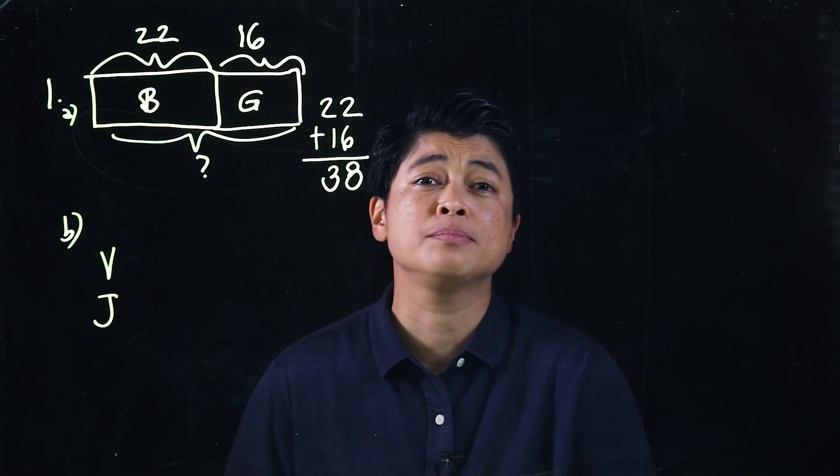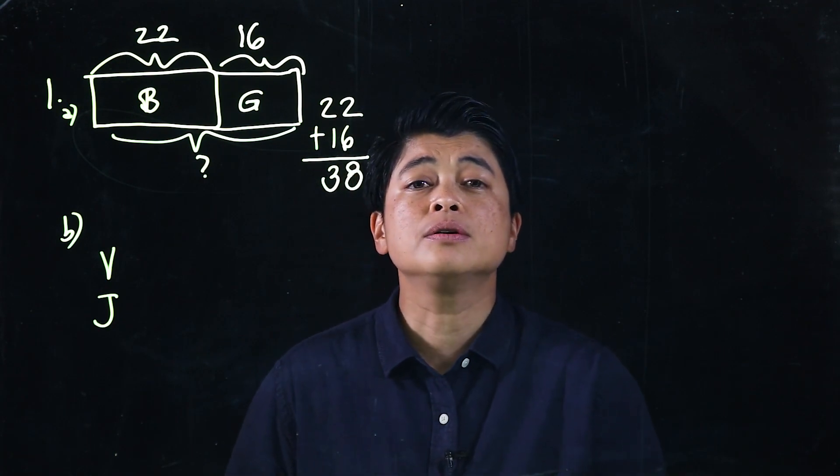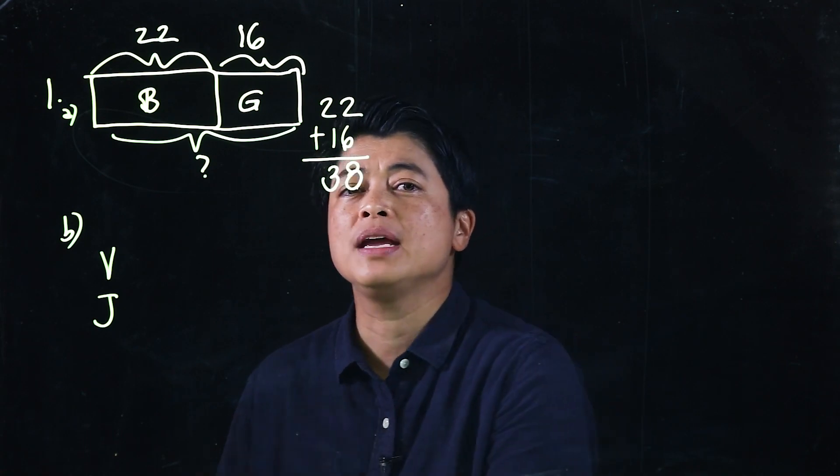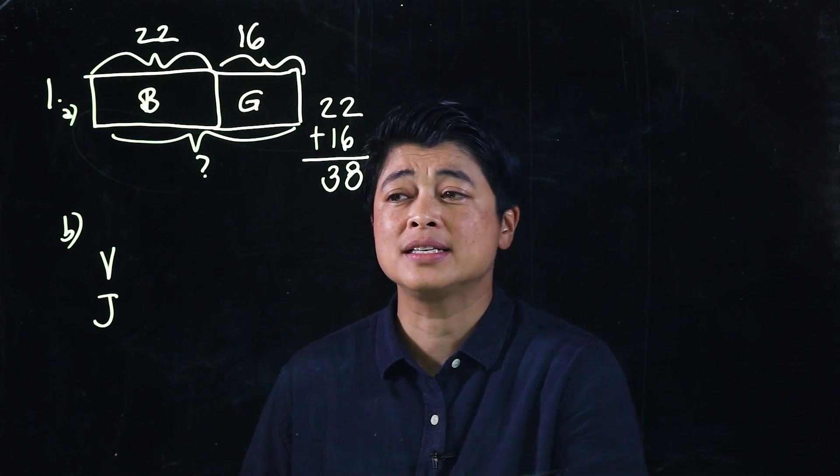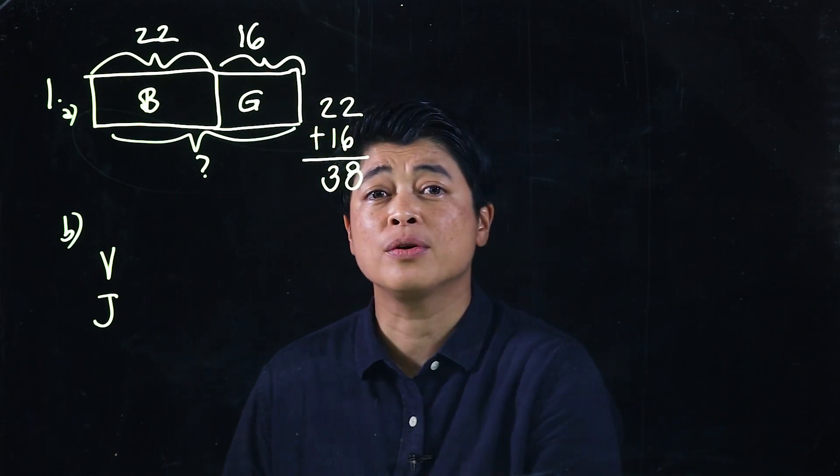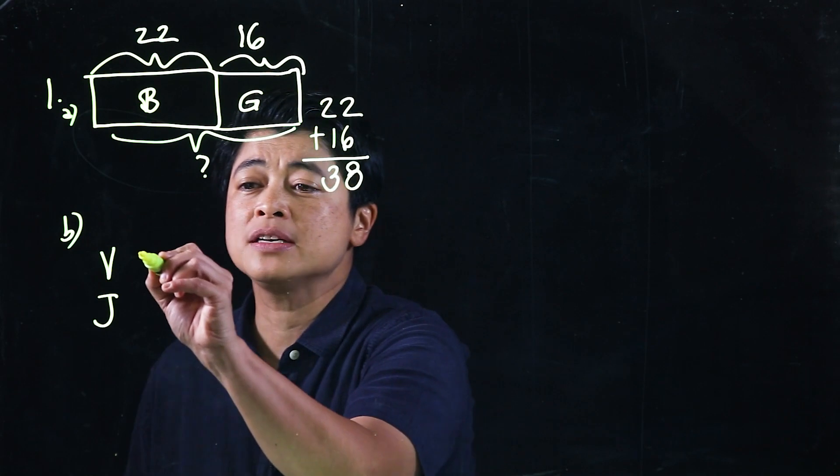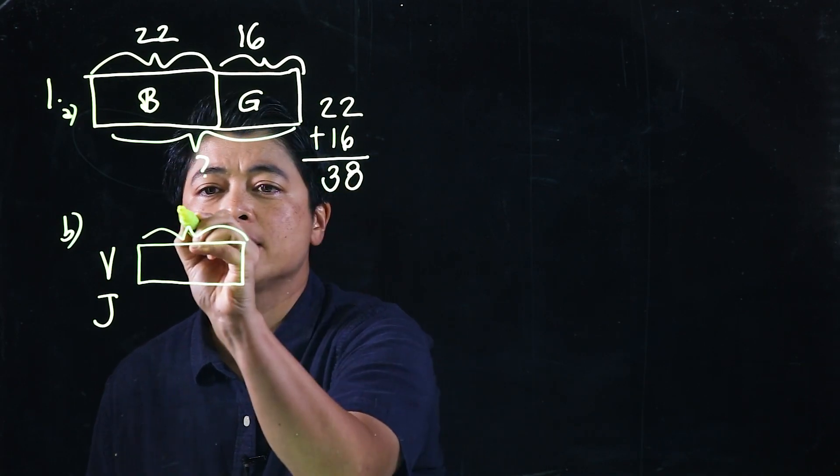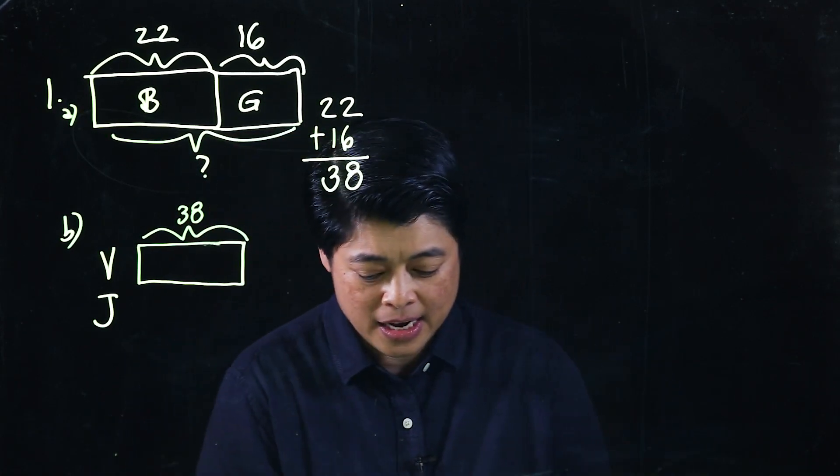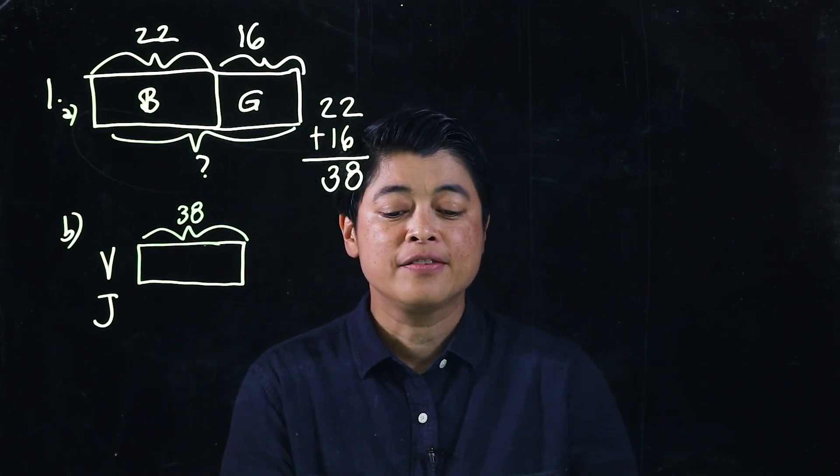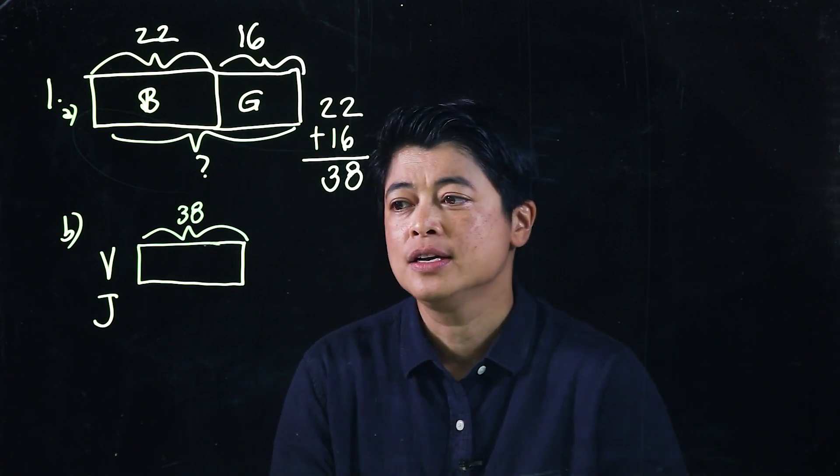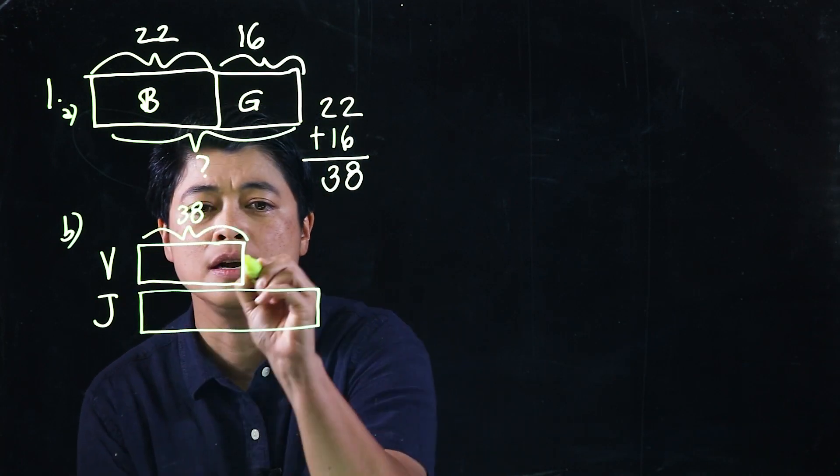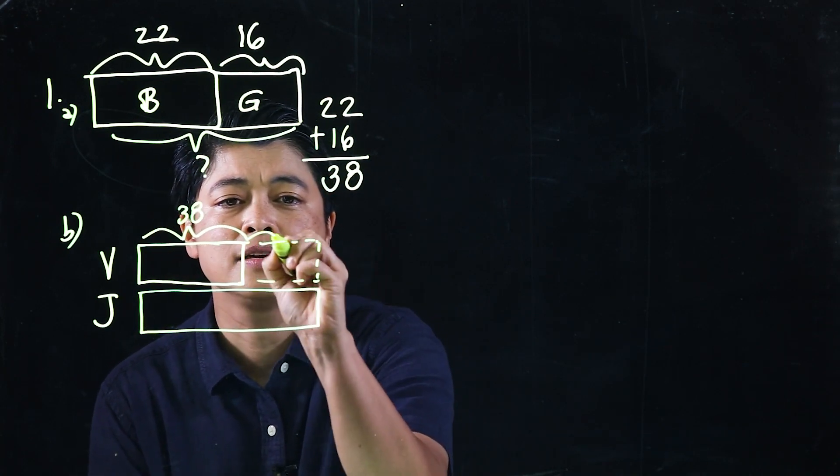But again, to be consistent, what we want is to start with Vicky and put Joshua underneath. The rationale being is Vicky's class was mentioned first. So if there's a bar model already, we follow the bar model, but we also need to be able to explain to our kids that it's okay if the bar model is different from what they have. So I'm going to start with Vicky. This is now 38 from A. And it says Joshua has 5 more children in his class, so that means Joshua's class is longer, and this more is 5.